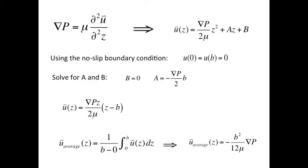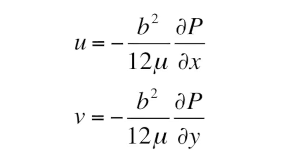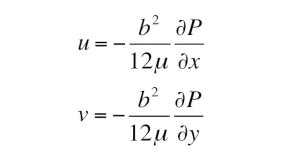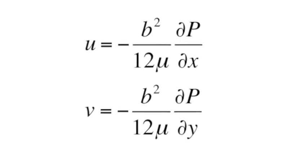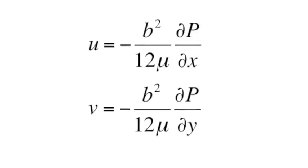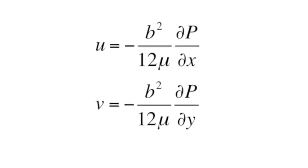Taking the average of U over the entire gap gives us the equation in the bottom right corner. These equations describe the mean velocity in a Hele-Shaw cell, which corresponds to the velocity in a two-dimensional porous medium.